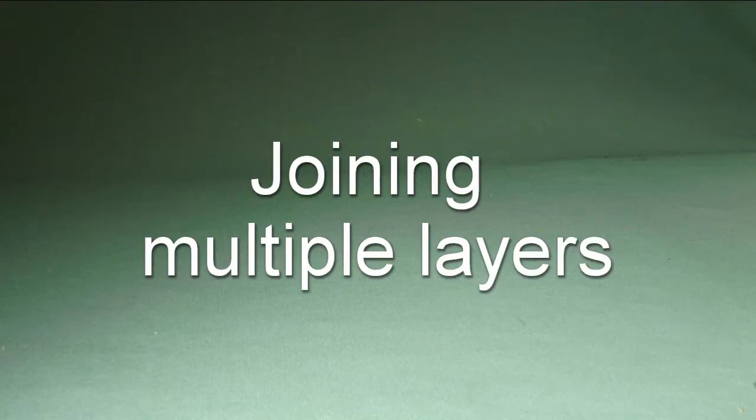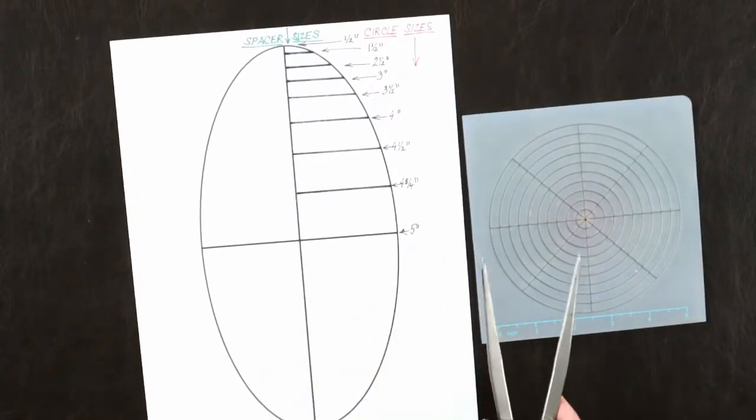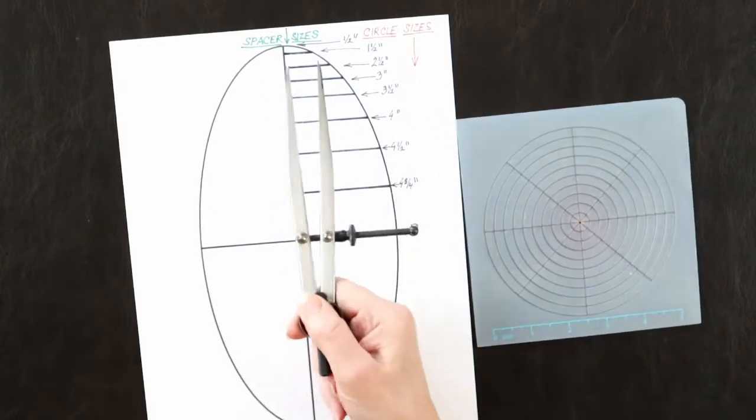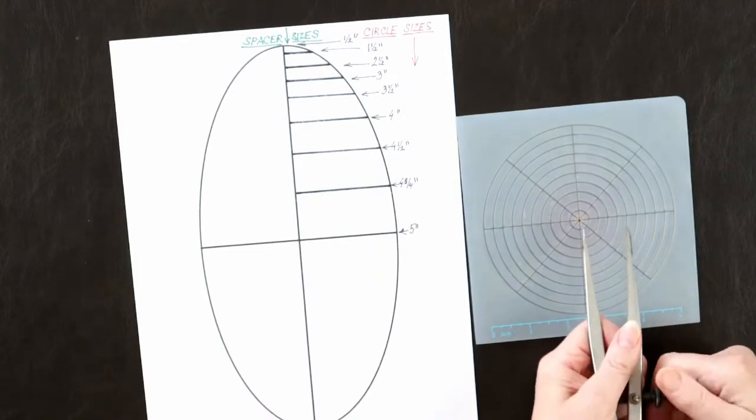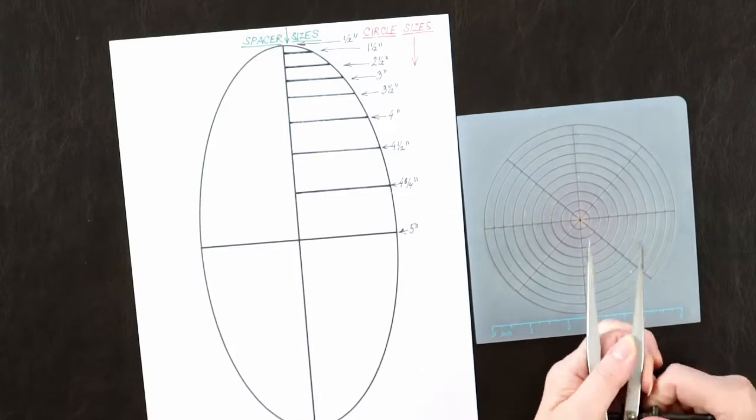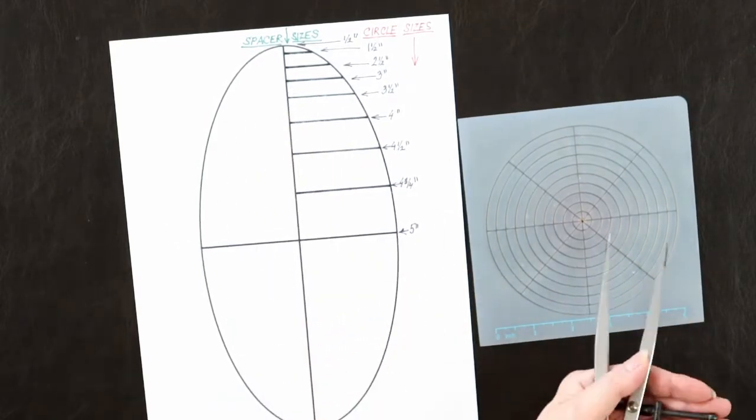Now how do you lift the layers to the right height and make them stay there? This will require a bit of planning. Draw a cross section of your project, in our case an ellipsoid, and mark where the sizes of the circles that are available fall onto the outline of the project. If they fall too close together, skip some.